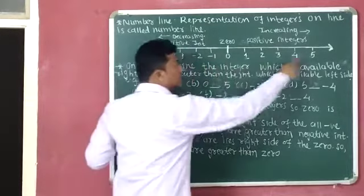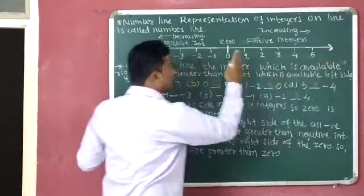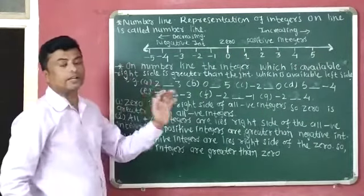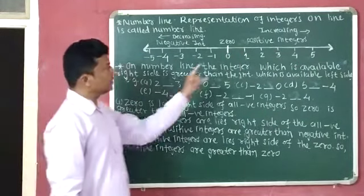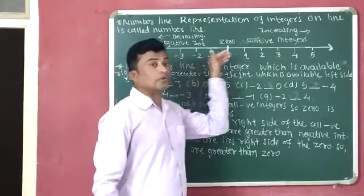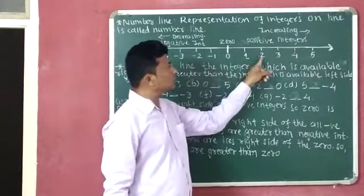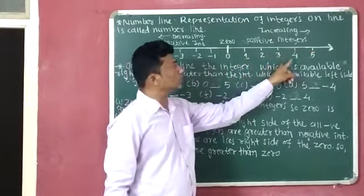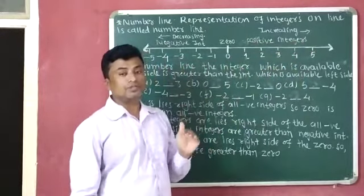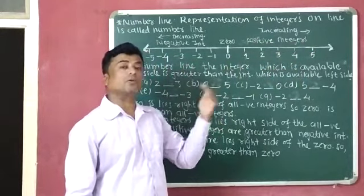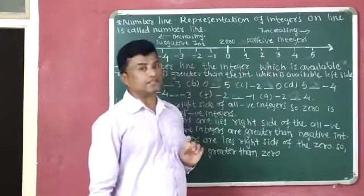This side is known as the right side of the number line, and this side is known as the left side. If you go right hand side on the number line — one, two, three, four, five — then numbers are increasing.